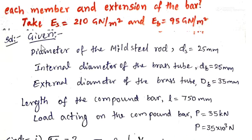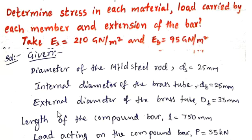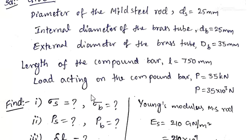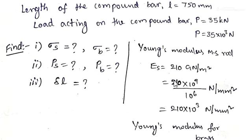Summary of given data: diameter of the MS rod D_S = 25 mm; internal diameter of brass tube = 25 mm; external diameter of brass tube = 35 mm; length of compound bar = 750 mm; load P = 35 kN = 35×10³ N; E_S = 210 GN/m². We need to express Young's modulus in N/mm² since load will be in newtons and stress in N/mm².